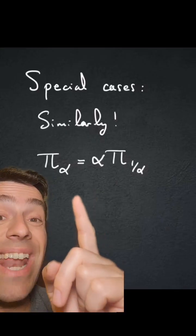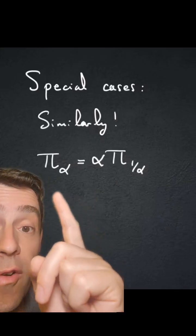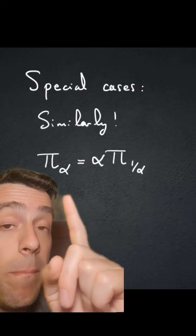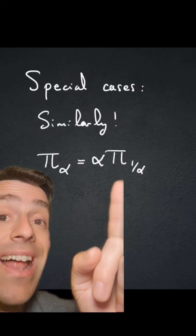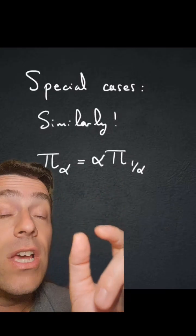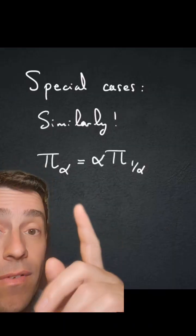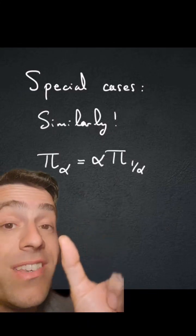This means that you can actually deduce all the values of pi sub alpha for alpha bigger than 1 from the values that are between 0 and 1. So we actually only need to graph pi sub alpha between 0 and 1.